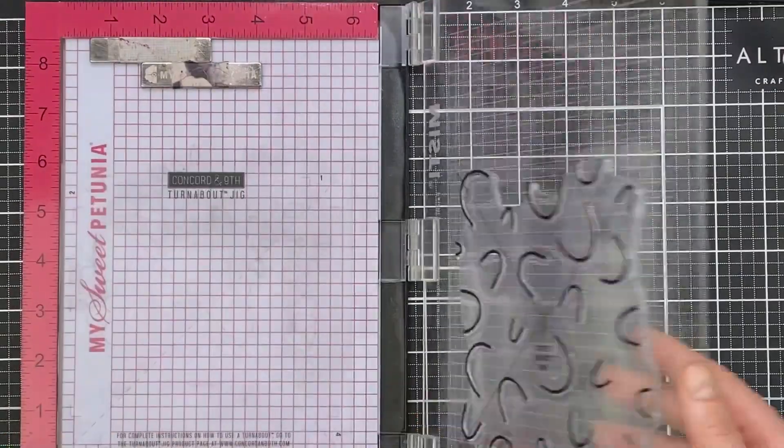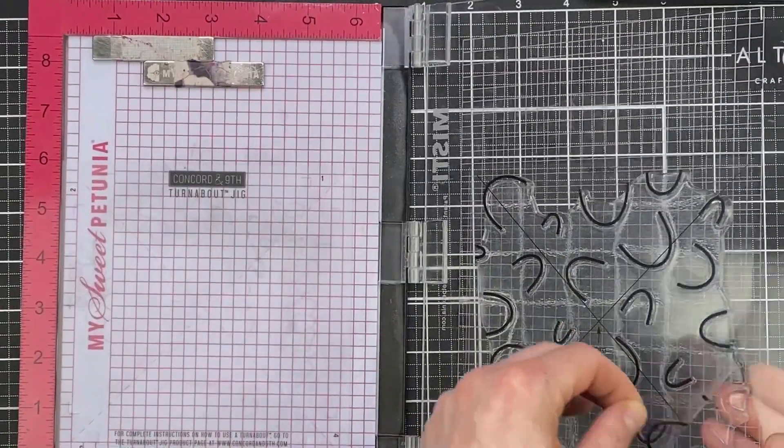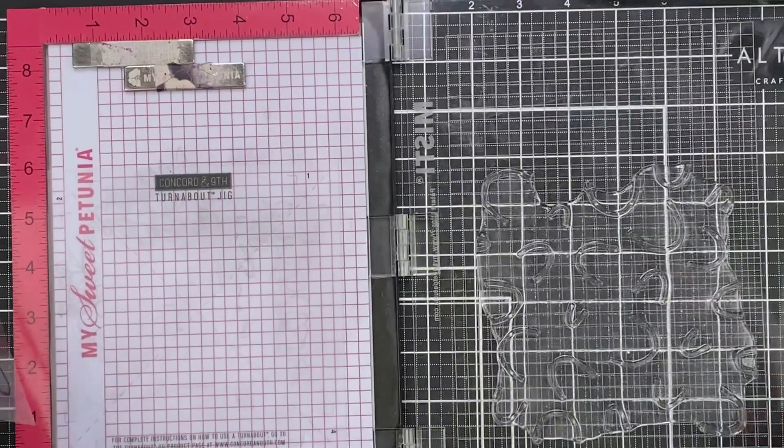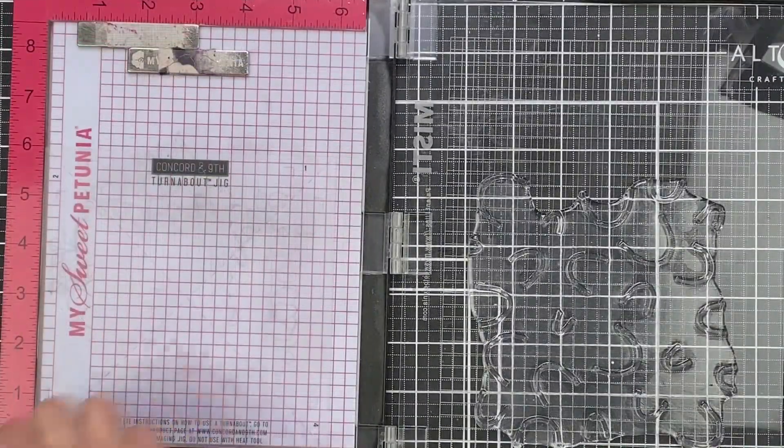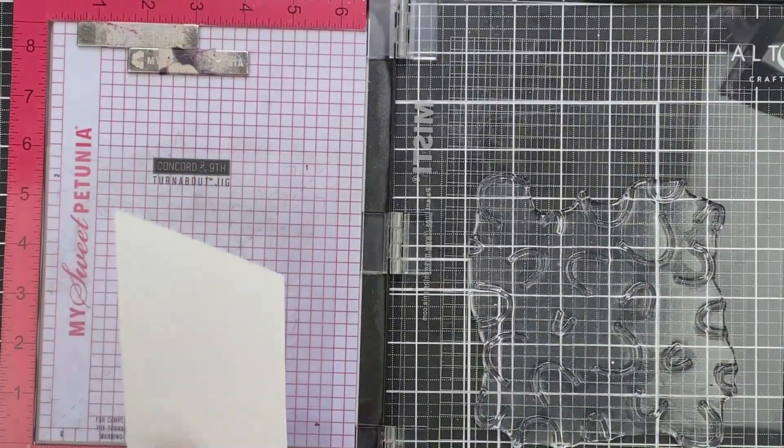Push down my MISTI, pick up the stamp, and then I can remove that acetate. You'll see that I've still got the jig on my MISTI in the background.